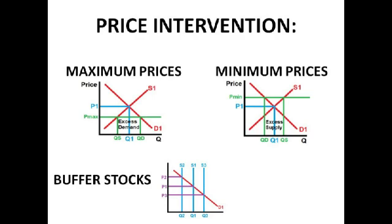Then we have minimum prices. A big one is food — it means that farmers producing the food are able to do so at an economically viable level, because otherwise the price of food would be too low and it would be unsustainable for them. Another big one for minimum prices is minimum wage. It means workers have a guaranteed minimum so they don't get abused. In some countries without a minimum wage, workers work long hours for very little — not enough for an acceptable standard of living. So we have minimum prices and minimum wages.